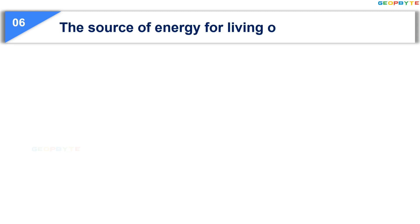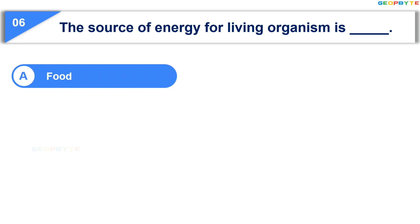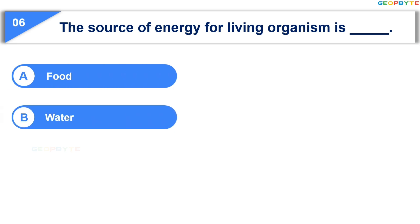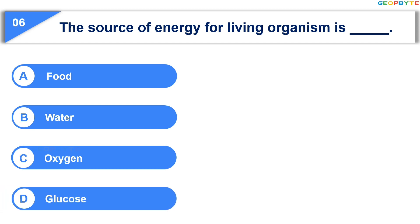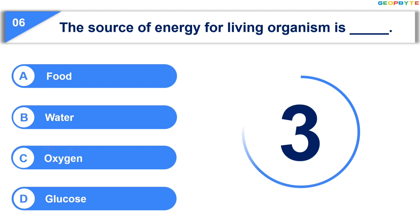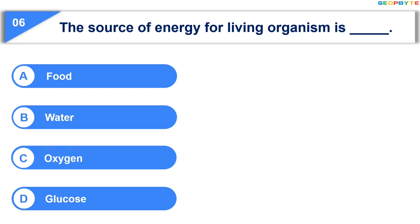The source of energy for living organisms is — Option A: food; Option B: water; Option C: oxygen; Option D: glucose. Your time is up and the correct answer is Option A: food.